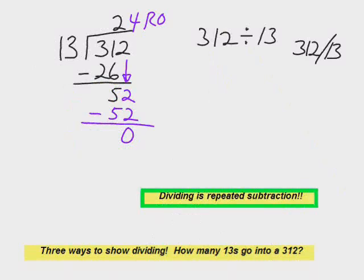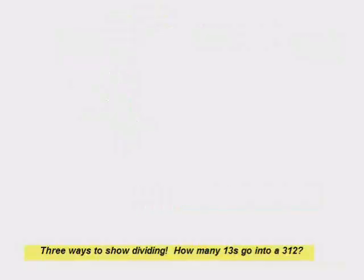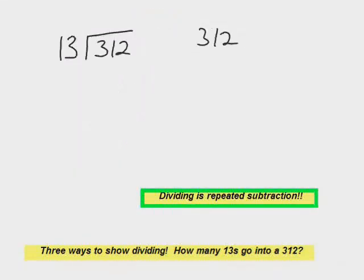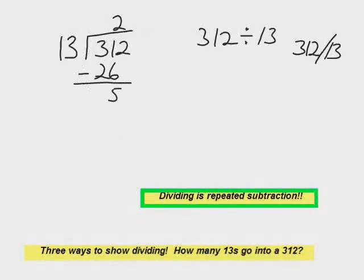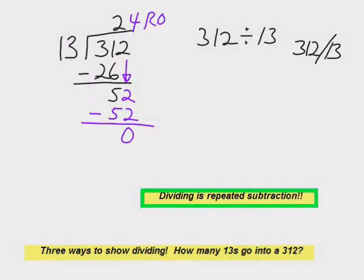Here's dividing. Dividing is really repeated subtraction. We just finished saying that multiply is repeated addition. Dividing is really how many ways can you take away a number. Let's say you've got something like 312 divided by 13. Notice that there's three ways to show 312 divided by 13. Make sure you know what is doing the dividing.